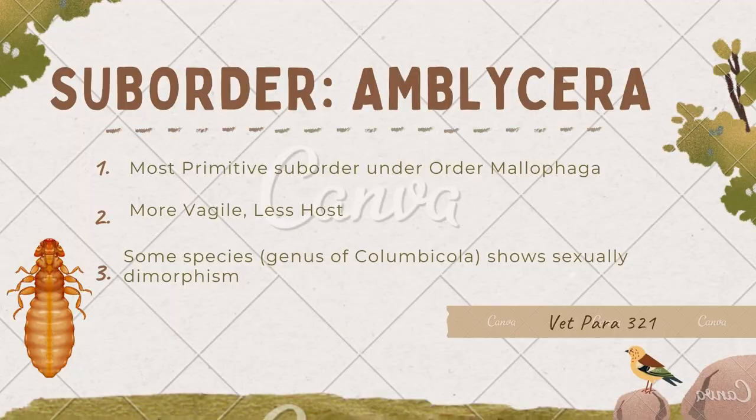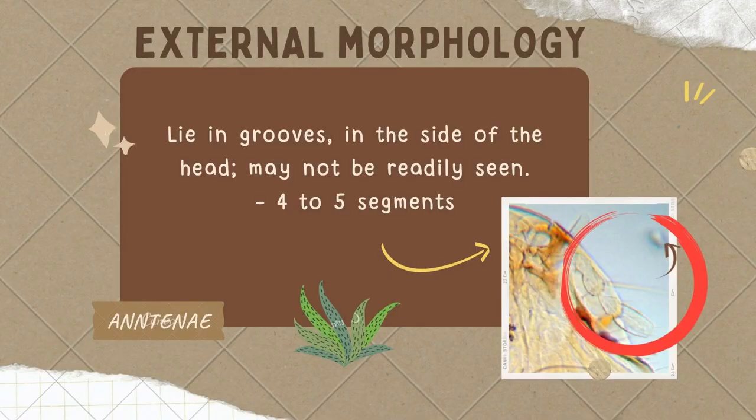Now we will examine the external morphology of Amblycera. First, the antennae lie in grooves on the side of the head, which may not be readily seen. As you can observe, the antennae have four to five segments.